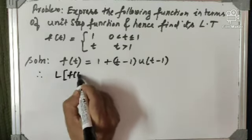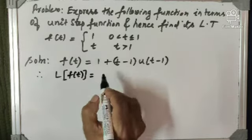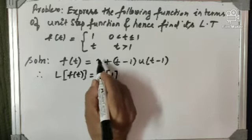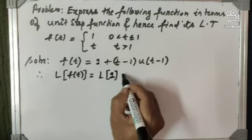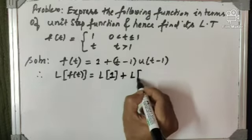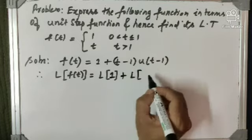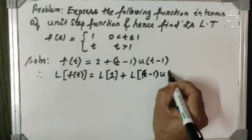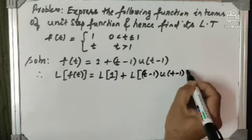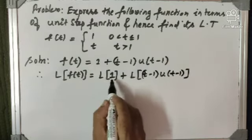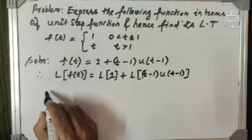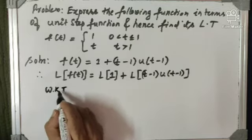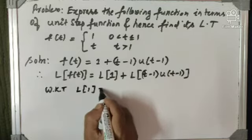So, applying Laplace transform on both sides, L of f of t will be equal to, using the linearity property of Laplace transform, L of 1 plus L of t minus 1 into u of t minus 1. We know that the Laplace transform of 1 is equal to 1 by s.